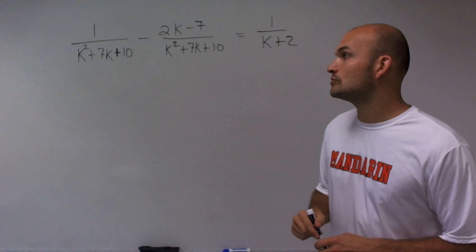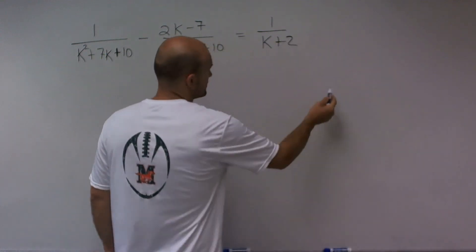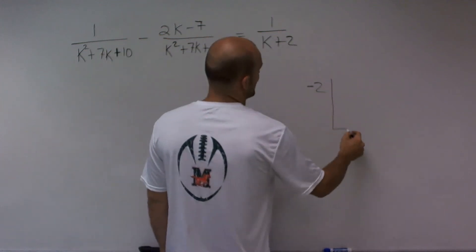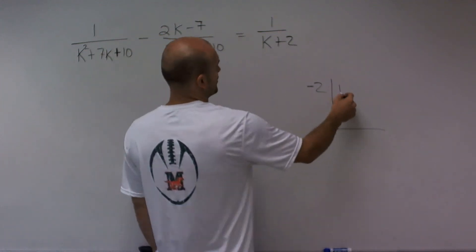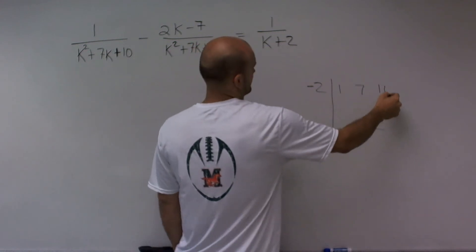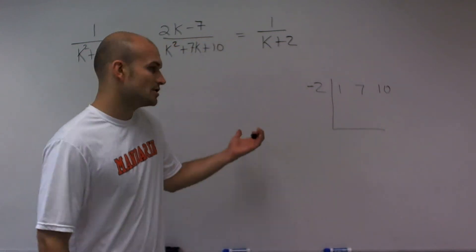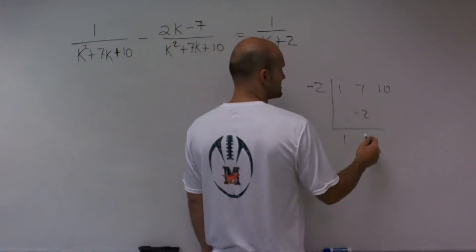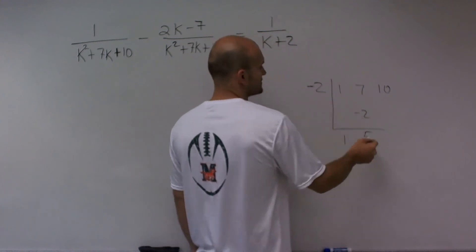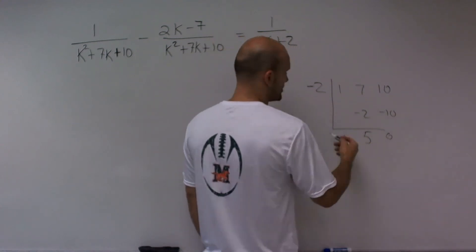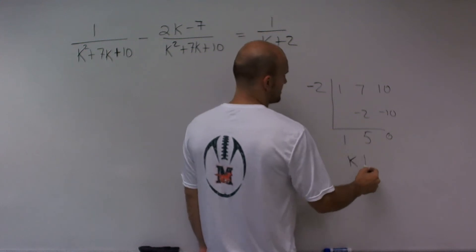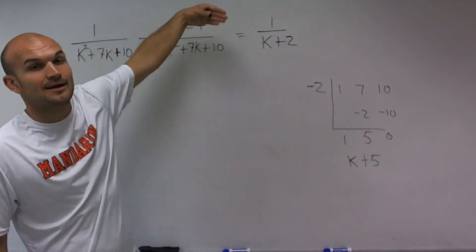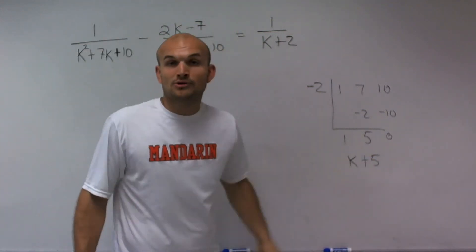I'm going to use synthetic division to prove that it does work. So to use synthetic division, I'm going to use the opposite of my binomial term, negative 2. And then I'm just going to take the coefficients of my trinomial to bring it down. So not making a tutorial on synthetic division. You bring down the first term. Negative 2 times 1 is negative 2. 7 plus negative 2 is 5. Negative 2 times 5 is negative 10, 0. So therefore, I end up with k plus 5. So yes, k plus 2 actually does divide into k squared plus 7k plus 10 by multiplying by k plus 5.